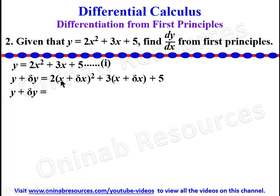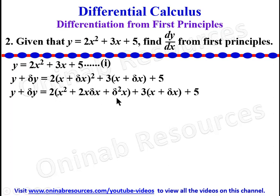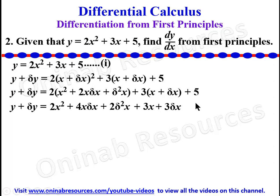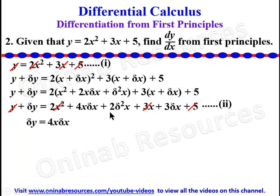Here we expand the right hand side: 2(x + delta x)² expands to 2(x² + 2x·delta x + delta²x), and 3(x + delta x) expands to 3x + 3·delta x. So y + delta y = 2x² + 4x·delta x + 2·delta²x + 3x + 3·delta x + 5. This is equation 2. Equation 2 minus equation 1: y cancels y, 2x² cancels, 3x cancels, and 5 cancels. We are left with delta y = 4x·delta x + 2·delta²x + 3·delta x.